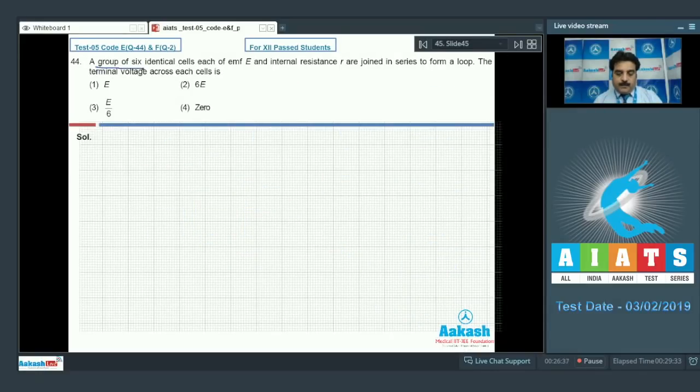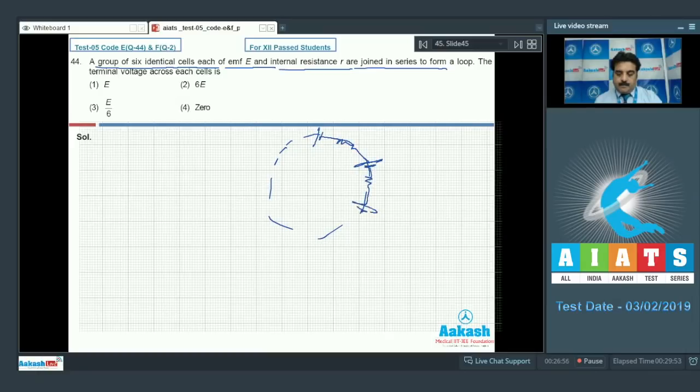Question number 44: a group of 6 identical cells, each with EMF E and internal resistance R, are joined in series to form a loop. Find the terminal voltage across each cell. A loop means like this: 6 cells, 1, 2, 3, 4, 5, and 6, all having EMF E and resistance R.